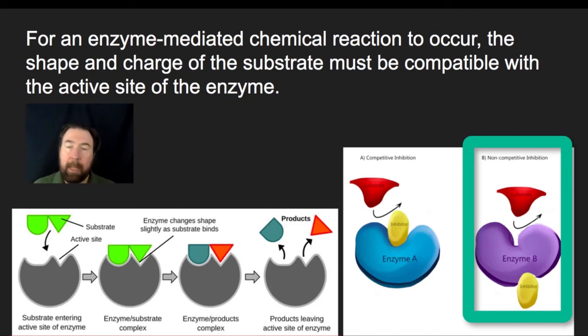If you recall, a protein is a long chain of amino acids, and all of those amino acids have side chains with chemical properties. It's possible that there could be, in addition to the active site, a separate area on that enzyme where an inhibitor could bind.